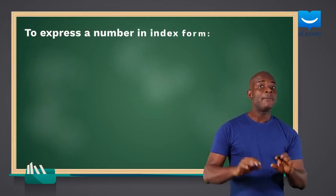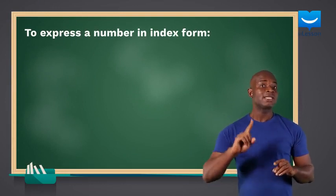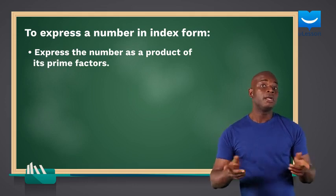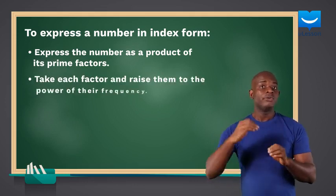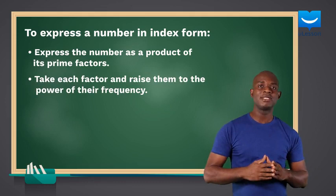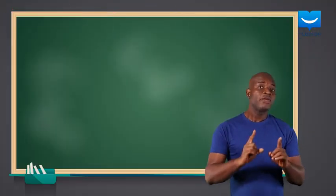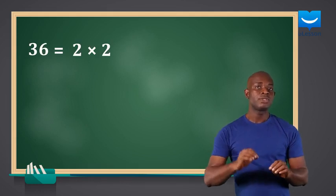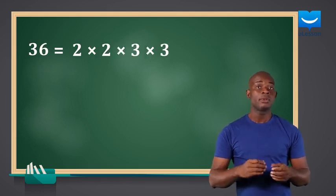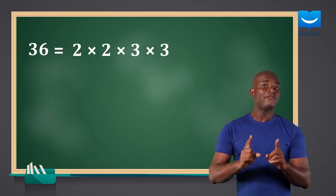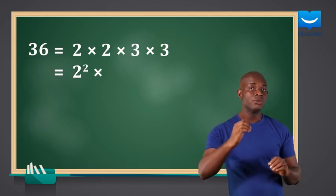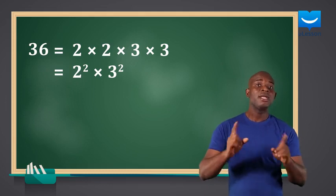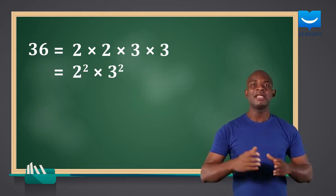Generally, to express a number in index form, we first express the number as a product of its prime factors. Then we take each factor and raise them to the power of their frequency. So if we have 36, it can be expressed as 2 times 2 times 3 times 3. We can further group the prime factors to get 2 power 2 times 3 power 2. We have successfully expressed 36 in index form.